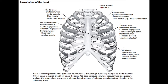The mitral valve listening post is approximately at the midclavicular to axillary border on the left side in the fifth intercostal space. At the mitral listening post, you will hear the systolic murmur of mitral valve regurgitation when it occurs, as well as the diastolic murmur of mitral valve stenosis.